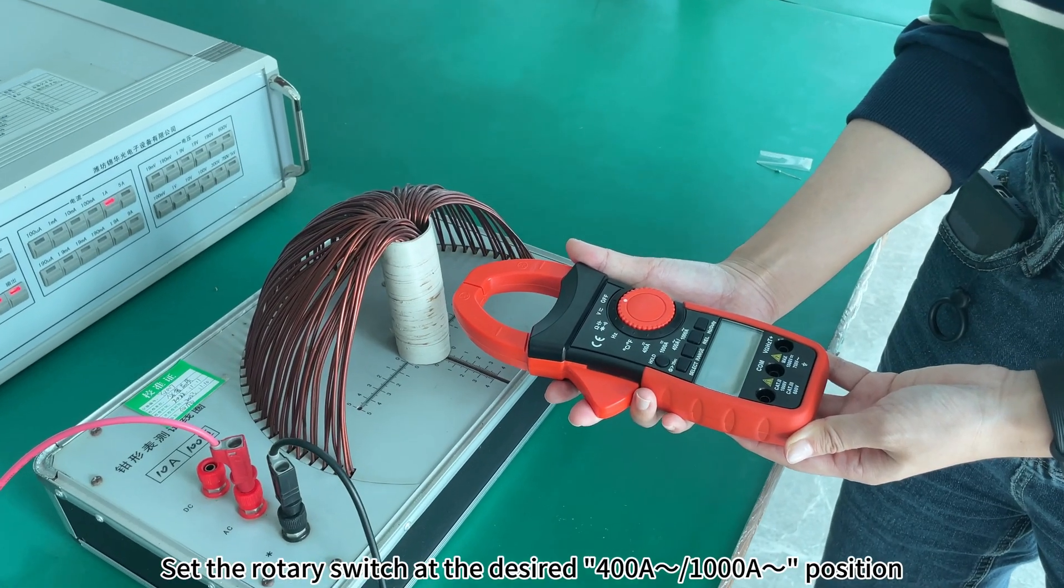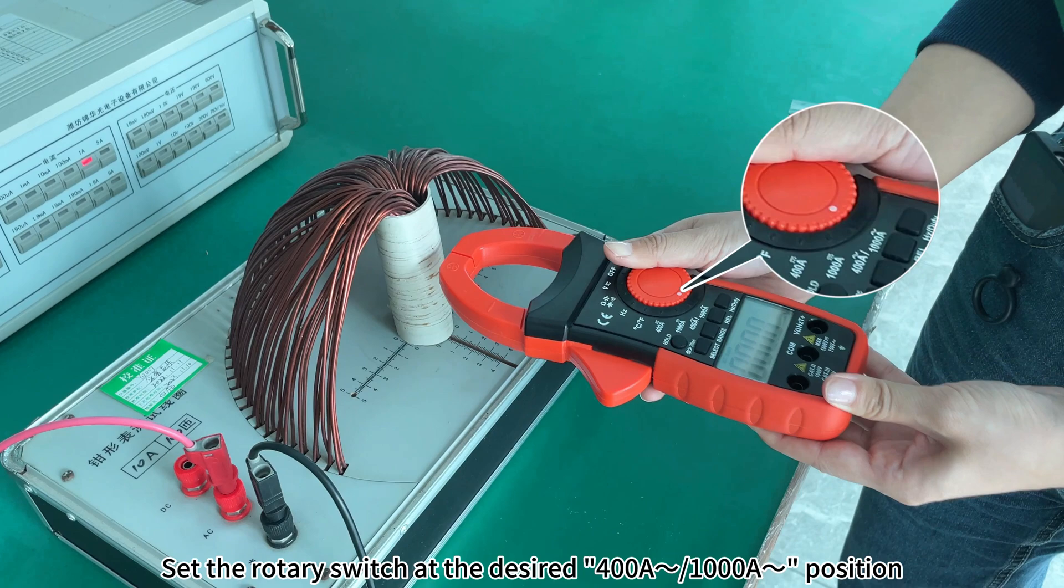Set the rotary switch at the desired 400A or 1000A down position.